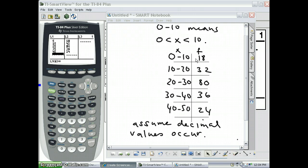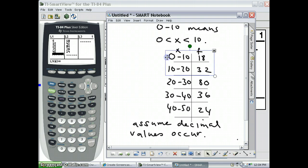One thing to notice is that if we wanted to find where we're going to put the rectangle for 0 to 10, it would make sense, since the values can go from 0 up to 9.9999 and so on, to center the rectangles above what we call the mid-interval value.